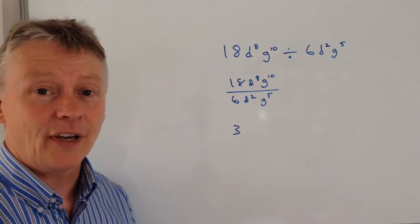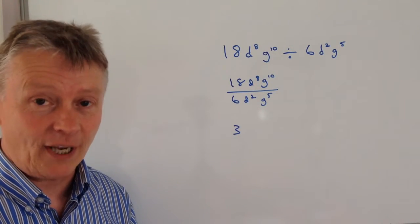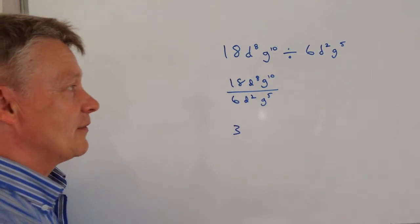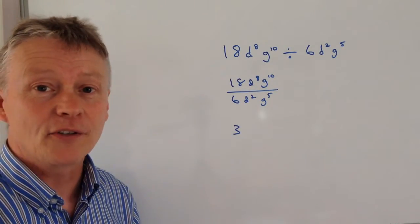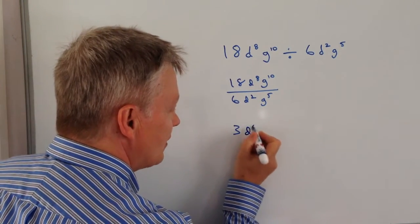The next thing I've got is d to the power of 8 divided by d to the power of 2. Well, using laws of indices we just simply subtract those and that becomes d to the power of 6.